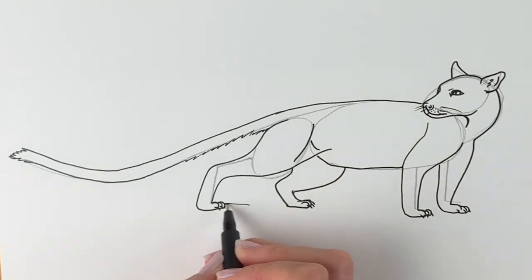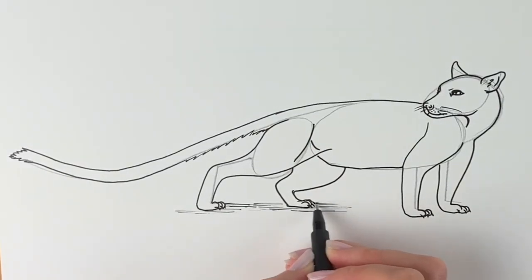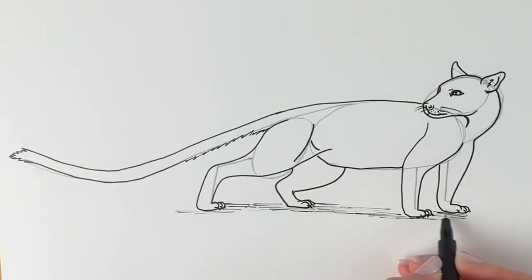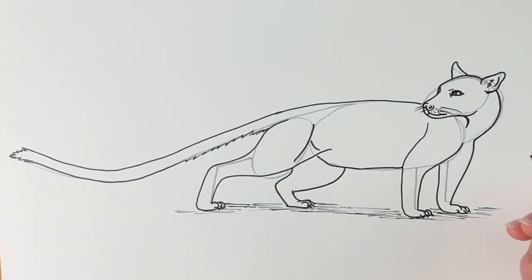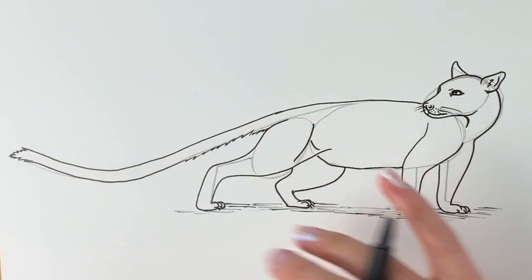Now I'm going to add in a little bit of shadow underneath so it doesn't look like it's just floating, so just using these horizontal lines I'm just going to do some shadow underneath just like this. So last but not least, if you haven't gone over it in pen, do so now, and then erase all the pencil lines.